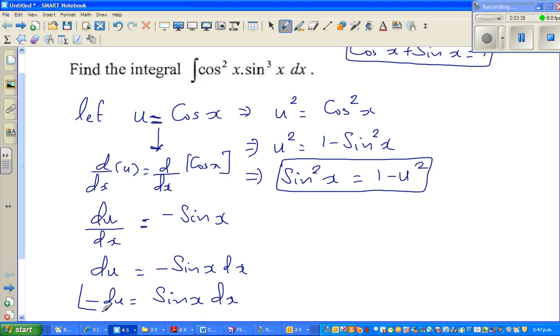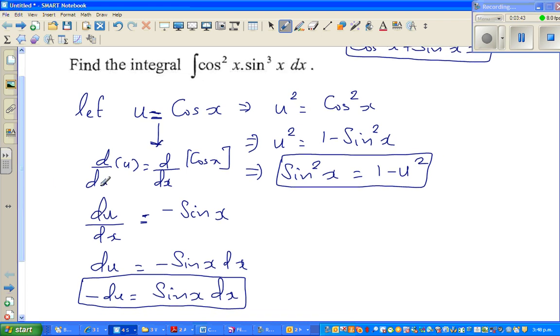So these are the three things that we need to substitute back. Okay, so let me rewrite the question. Therefore, integration of cos squared x times, I'm writing sine cube x as sine squared x times sine x dx.